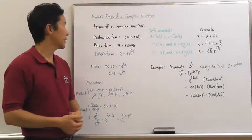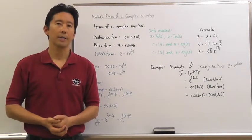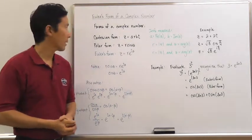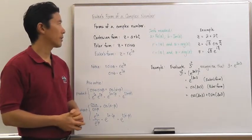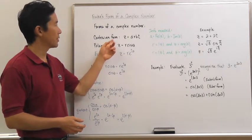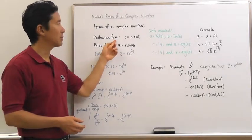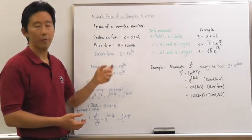Hello everyone. Let's go ahead and take a look at Euler's form of a complex number. Now, we know certain forms of a complex number, such as the Cartesian form as well as the polar form.